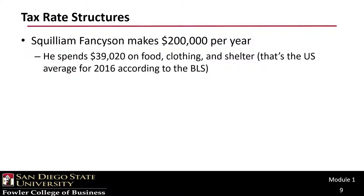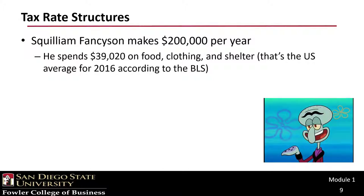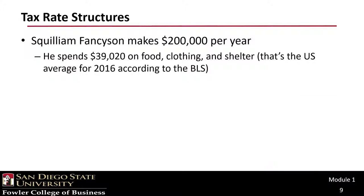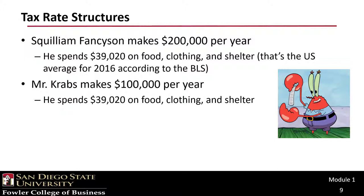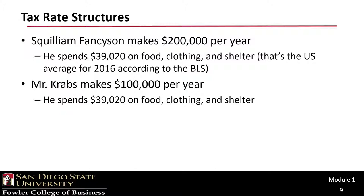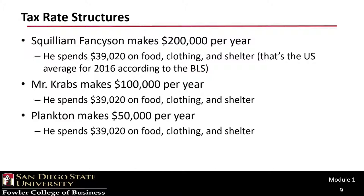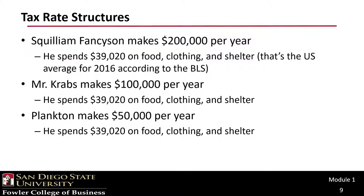If we look at Squilliam Fancyson, he makes $200,000 a year in income. Based on the Bureau of Labor Statistics, he spends just over $39,000 on food, clothing, and shelter — assuming he spends the average amount on those items in 2016. Mr. Krabs makes half of what Squilliam makes, $100,000. But consumption behavior, especially for food, clothing, and shelter, tends to be more sticky with respect to income. So Mr. Krabs also spends about $39,000 on food, clothing, and shelter. Plankton makes only half of what Mr. Krabs makes at $50,000, but he still spends about $39,000 on food, clothing, and shelter.